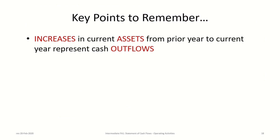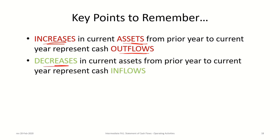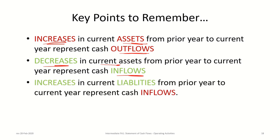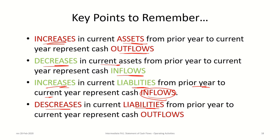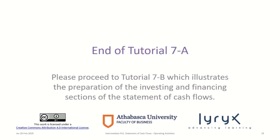Let's conclude with key points to remember. Increases in current assets from prior year to current year show as cash outflows; decreases in current assets are cash inflows. On the liability side, the opposite applies: increases in liabilities are cash inflows, and decreases in liabilities are cash outflows. This concludes tutorial 7a on the operating section — please proceed to tutorial 7b for the investing and financing sections.